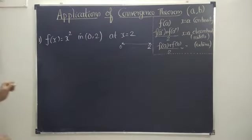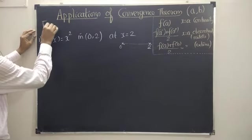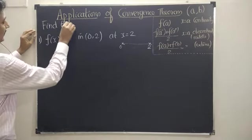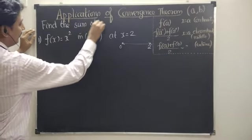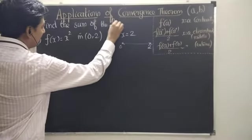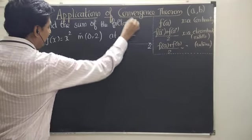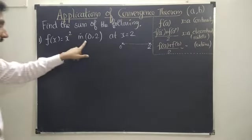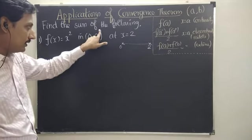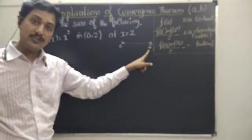In this first question, I am considering: find the sum of the following functions. The first one, I am considering f of x equal to x squared in the open interval. Open interval means these two points are points of discontinuity — they are not included.